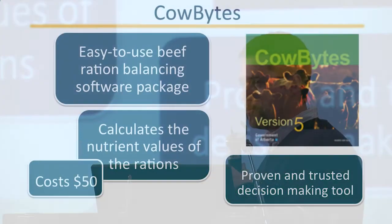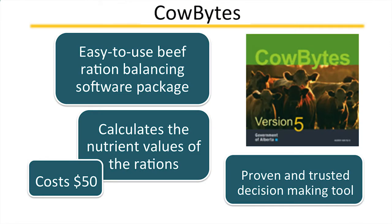The other program we wanted to quickly highlight is Cowbytes. The program was just updated this year — Pat Ramsey's in the room as well, and Barry or MCO worked to develop it. The new version is out, updated for Windows 7 and considerably more user-friendly. For those that don't know, it's easy-to-use beef rationing software. It amazes me how accurate this program is — barely off from the actuals. It's a proven and trusted tool, something of a Cadillac program in Canada. And the best part, it's available for very minimal cost at about 50 dollars.